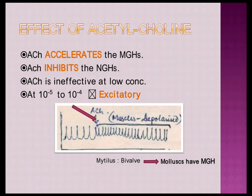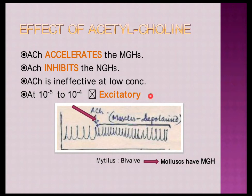This slide explains the effect of acetylcholine on myogenic and neurogenic hearts. ACh was accelerating myogenic hearts and inhibiting neurogenic hearts. ACh is ineffective at very low concentrations but can be excitatory at a concentration of 10 to the minus 5. After administration of ACh, the heart was excited at this level — this is the example of Myelis.